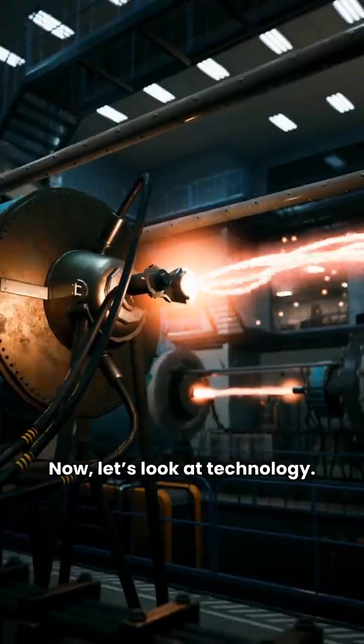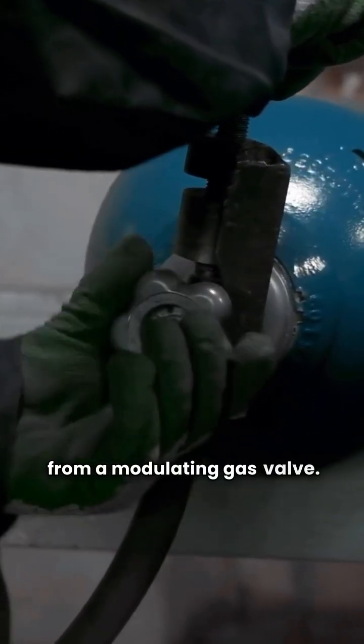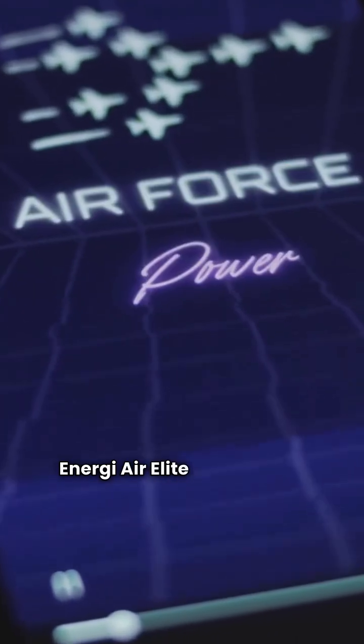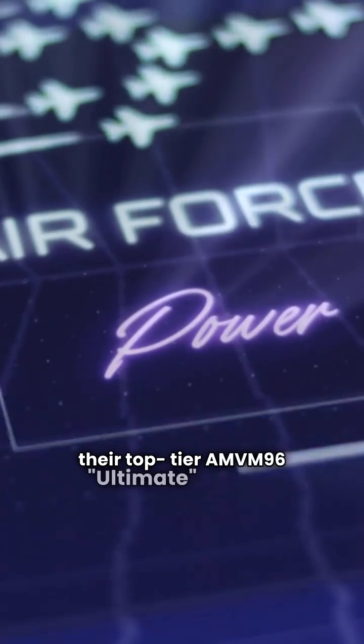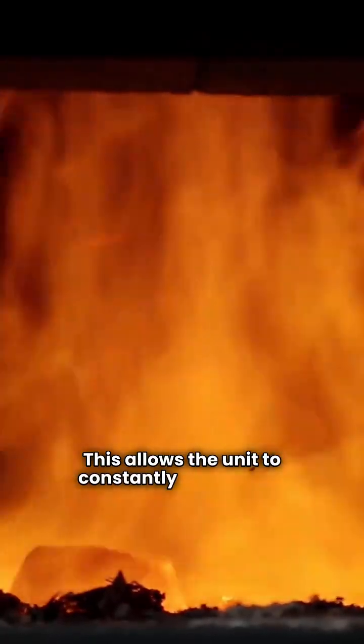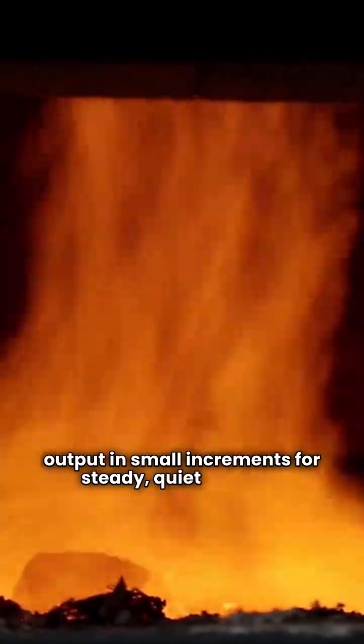Now let's look at technology. The ultimate in home comfort comes from a modulating gas valve. Energy Air Elite offers this in their top tier AMVM96 Ultimate model. This allows the unit to constantly adjust heat output in small increments for steady, quiet warmth.